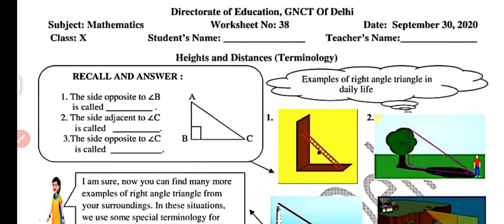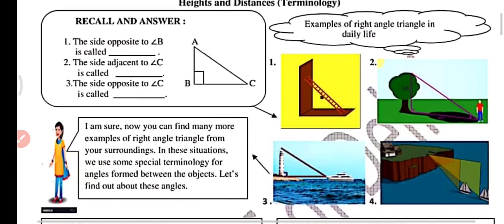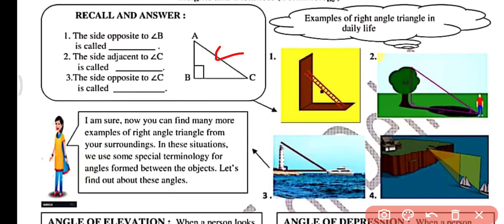Before we begin, recall and try to answer: what is the side opposite angle B in triangle ABC? We have a triangle ABC in which angle B is a right angle. The side opposite angle B is AC, which is the hypotenuse. The side adjacent to angle C is BC, which is the base, and the side opposite angle C is AB, which is the perpendicular.